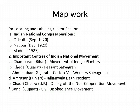Important Centers of the Indian National Movement: Champaran in Bihar — Movement of Indigo Planters; Kheda in Gujarat — Peasant Satyagraha; Ahmedabad in Gujarat — Cotton Mill Workers Satyagraha; Amritsar in Punjab — Jallianwala Bagh Incident; Chauri Chaura in UP — calling off of the Non-Cooperation Movement; Dandi in Gujarat — Civil Disobedience Movement. This is the map syllabus.